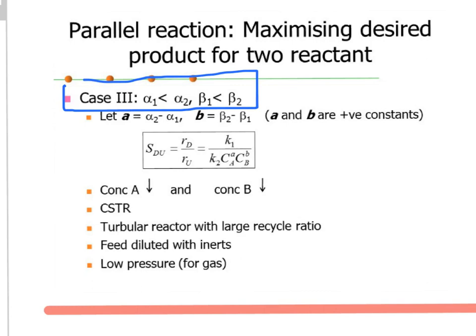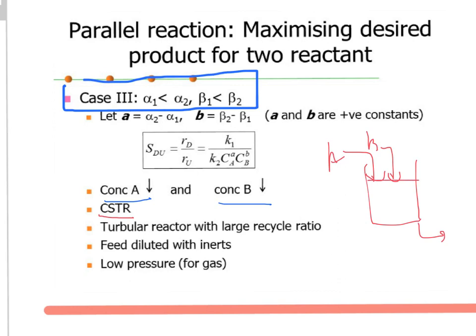For Case 3, both (alpha1 - alpha2) and (beta1 - beta2) are negative, so to maximize selectivity you must operate at low concentration of both A and B. The only option here is a CSTR, where A and B are fed directly and the concentration automatically drops to a low level. You can also use a tubular reactor with a large recycle ratio, feed diluted with inerts, or low pressure for gas-phase reactions.